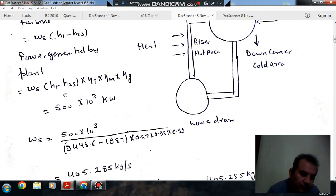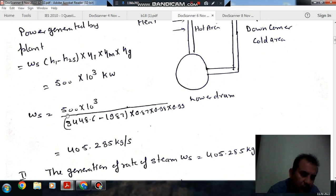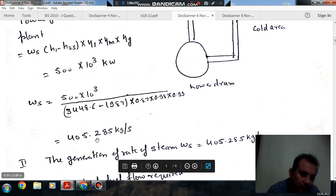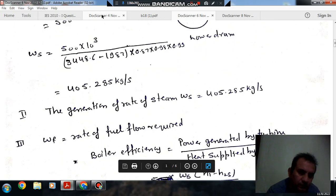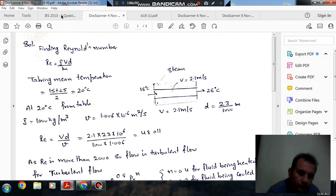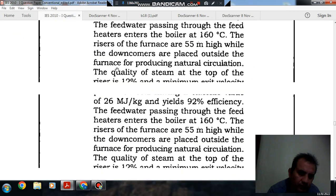And that is given as 500 megawatt or 500 times 10 to the 3 kilowatt. So now, putting this value, you can find that omega S comes out to 405.285 kg per second. This is the answer to this part.